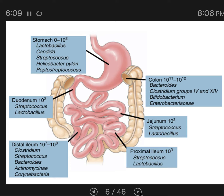Different parts of the intestines can be characterized by different types of microbes. The composition of these microbial communities is strongly affected by environmental factors of the different gut regions, such as the type of digestive products, the pH, the water content, the oxygen content, nutrients and micronutrients, and other properties.